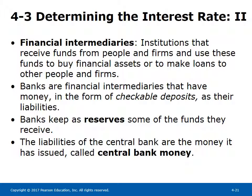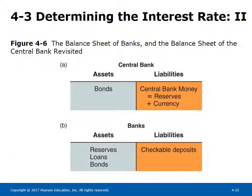Banks keep some of the funds they receive as reserves. The liabilities of the central bank are the money it has issued, called central bank money. Figure 4-6 shows the balance sheets of the central bank and commercial banks. Central bank money consists of currency in circulation in the hands of the public and reserves held in commercial and central banks. The main assets of commercial banks are reserves, loans, and bonds; the liabilities are checkable deposits.